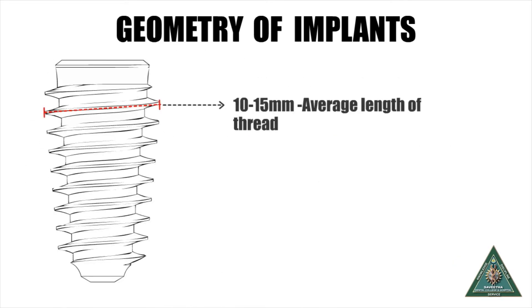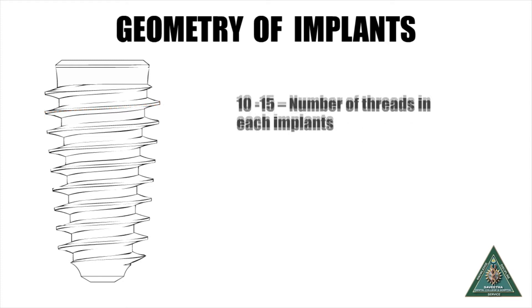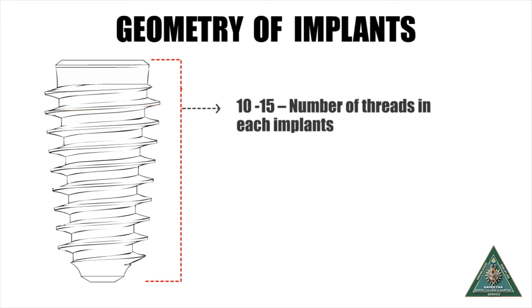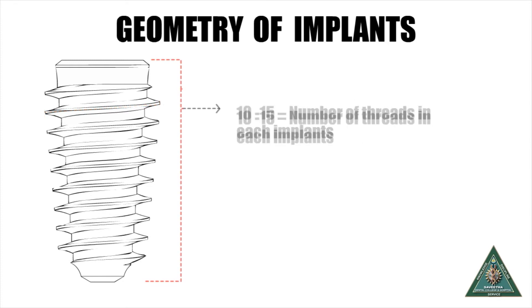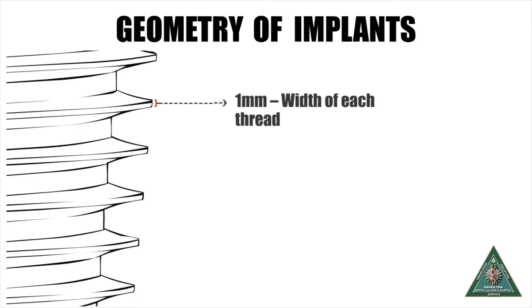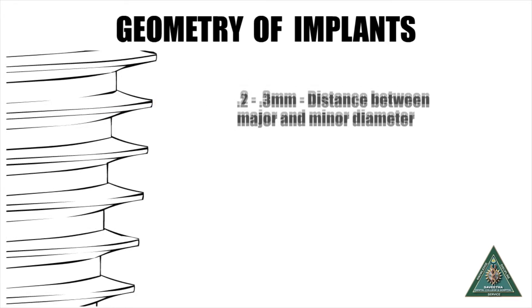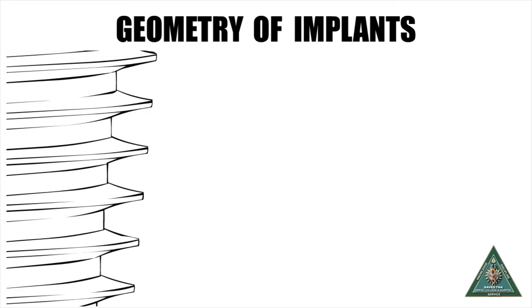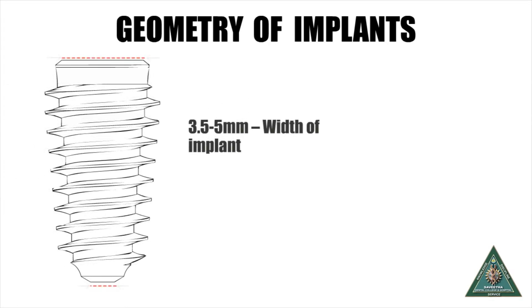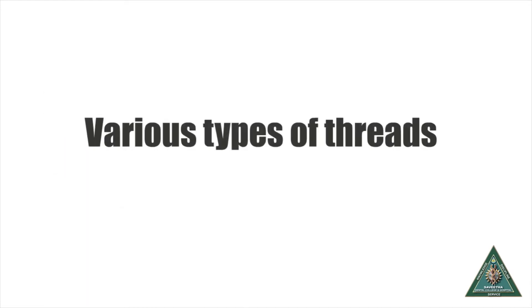The average length of an implant is 10 to 15 millimeters, and each implant will have 10 to 15 threads. The distance between the major and minor diameter is 0.2 to 0.3 millimeters. The width of the implant is usually between 3.5 to 5 millimeters.